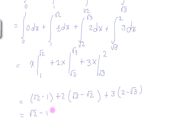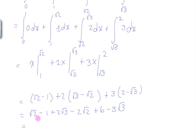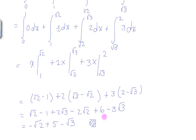Simplifying everything: we get 2 square root of 3 minus 2 square root of 2 plus 6 minus 3 square root of 3, which simplifies to negative square root of 2 minus 1 plus 5, giving us negative square root of 3 plus 5 minus square root of 2. And that's our answer. Thanks for watching, this is Joshua from Motiva.